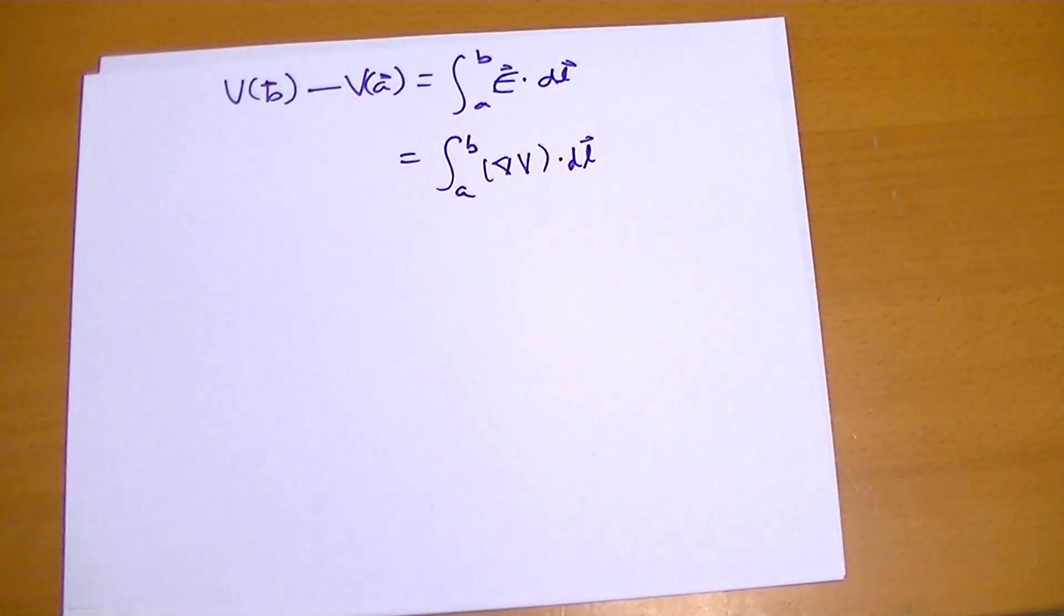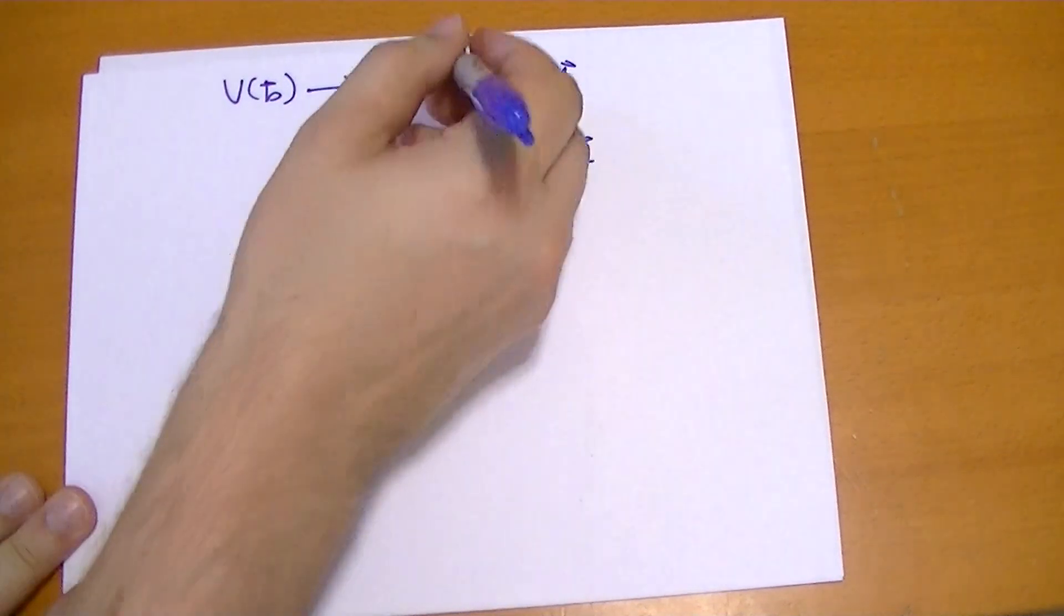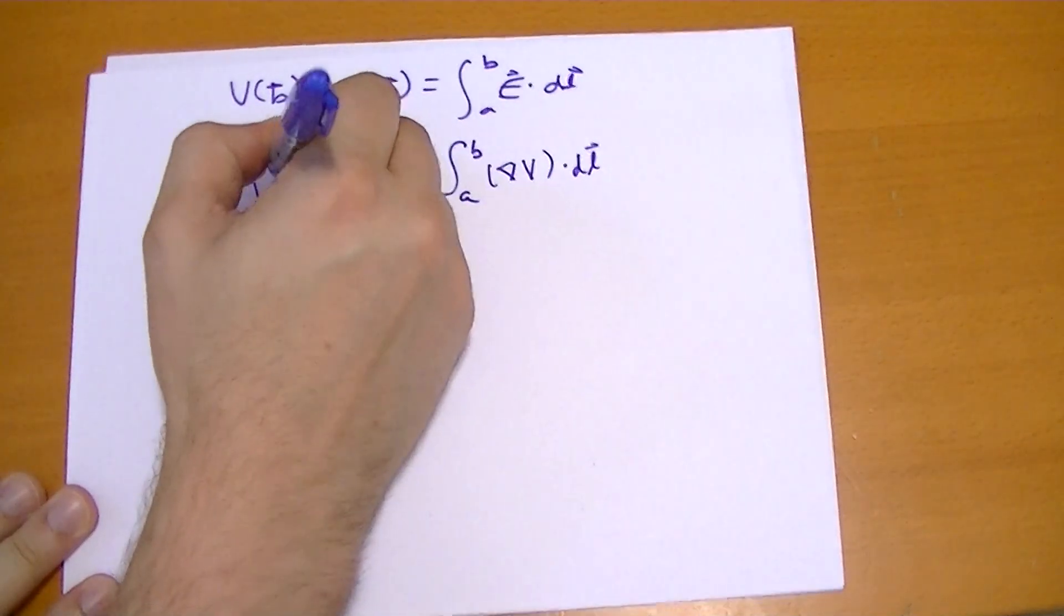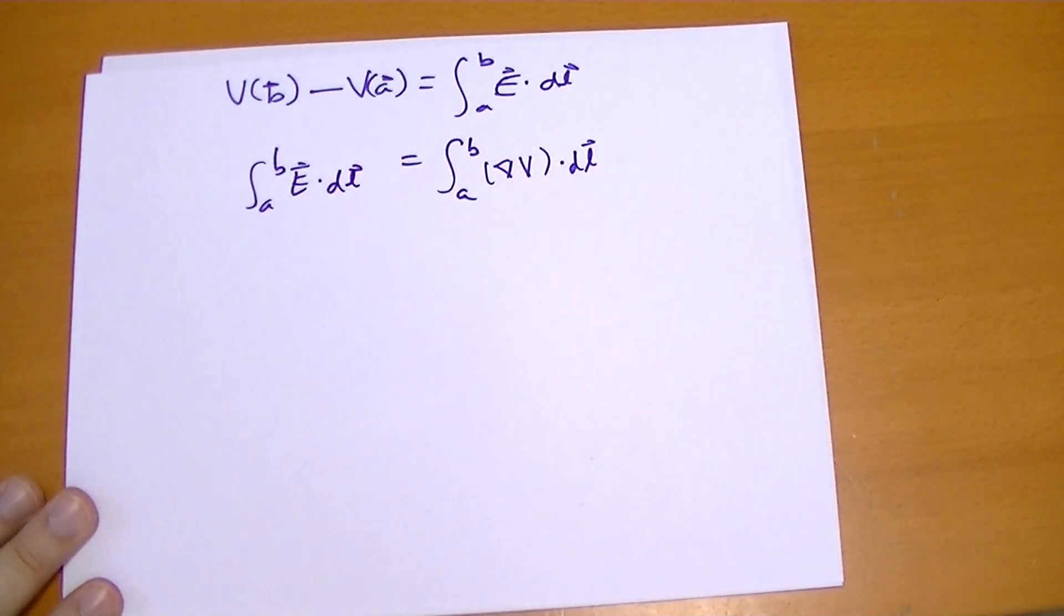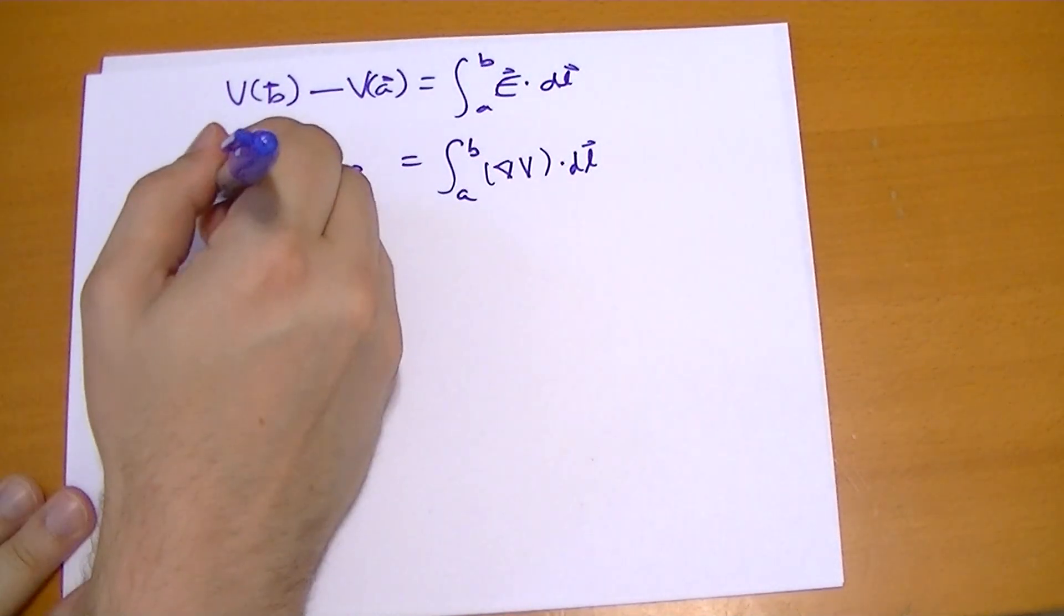So that is equal to - these two are equal to each other. So A to B of E⃗·dL is... oh actually, do I have it wrong here? I have a minus sign somewhere. I need to put a minus sign in. I'll put it here.